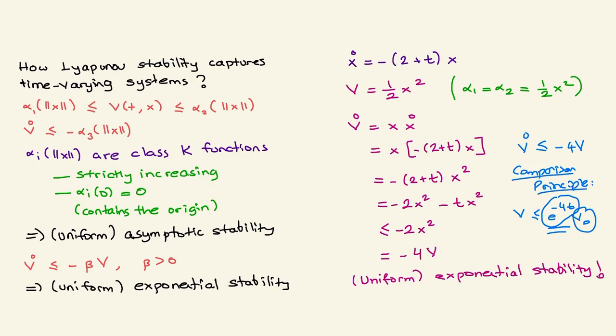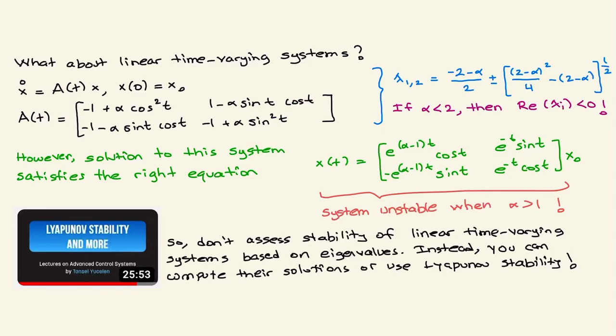For more discussion on the comparison principle and exponential stability, I refer you to the relevant video. In this video, I focused on the use of eigenvalues for linear time-invariant systems and the important fact that eigenvalue tests should not be used for time-varying systems. I think I covered what was needed — if you have any comments, please let me know. Thanks for watching.